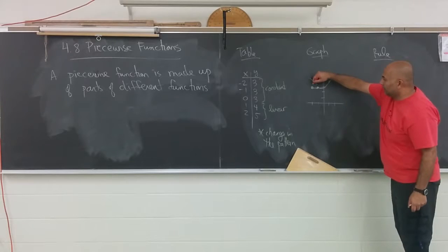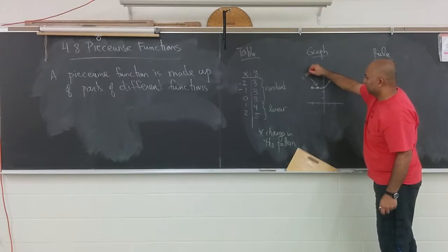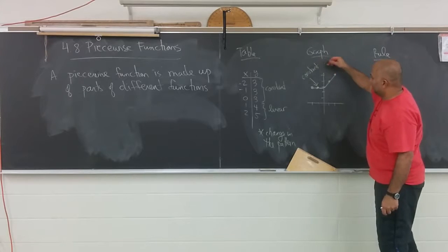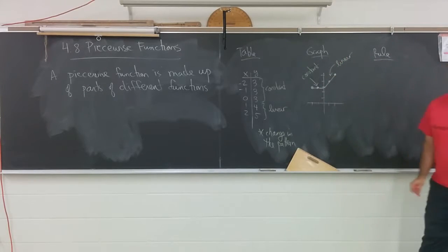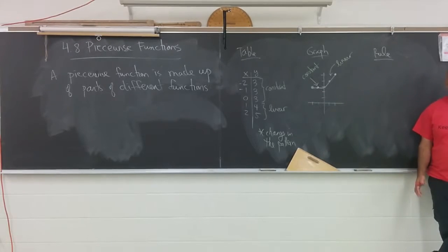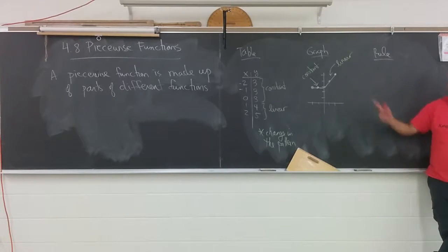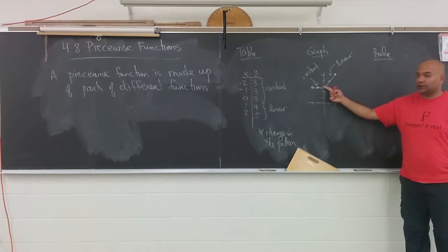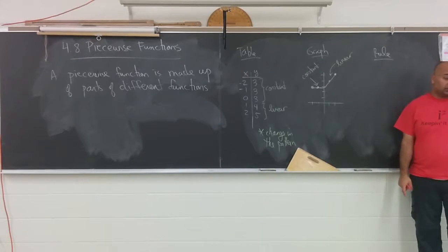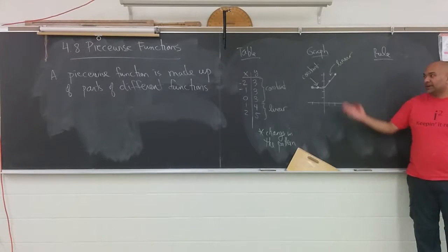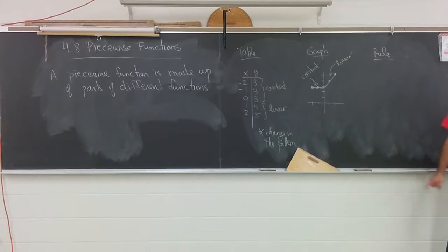We can see the first section - the flat line - that's the constant part. And we can see the diagonal line, that's the linear part, which we said was going to happen based off the table. Is it always going to be constant and linear? No. It could be any combination of any of the functions we've ever seen. Maybe it was exponential going like a curve, maybe a parabola on one half and a parabola on the other half. This is just one example where you have a constant and linear.